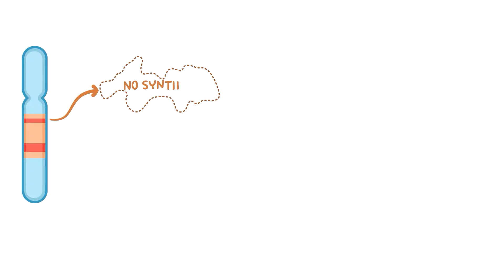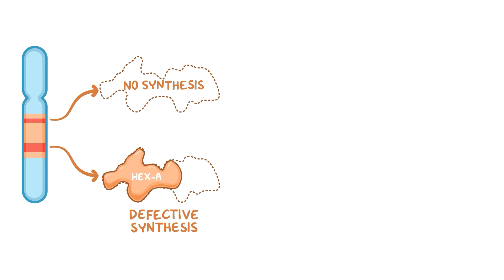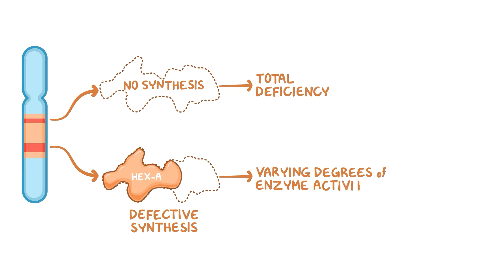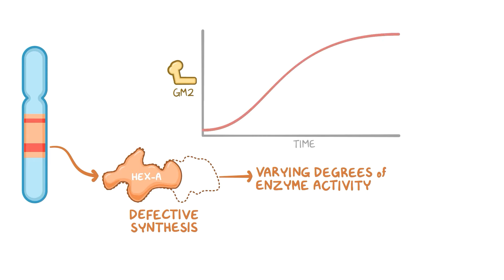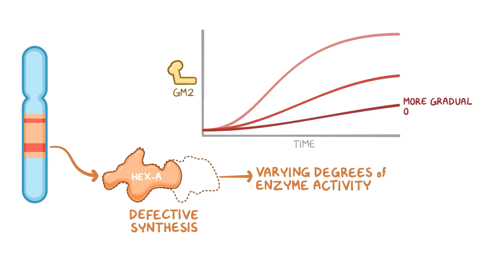These mutations can result in either no synthesis or defective synthesis of HEXA, resulting in either a total deficiency of HEXA or varying degrees of enzyme activity depending on the specific mutation. With some mutations, GM2 accumulates over a longer period of time, accounting for a more gradual onset of CNS symptoms in some people.